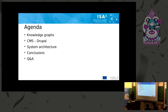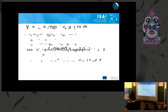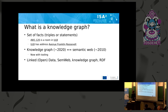A quick agenda: what are knowledge graphs, how does Drupal and the CMS world integrate with this, how we put everything together in one system architecture, some conclusions, and then questions and answers. Knowledge graphs — what is a knowledge graph? It is in fact a list of statements. A statement can be something of the form 'AW120 is a room in ULB.' In this statement there is a subject, a predicate, and an object.